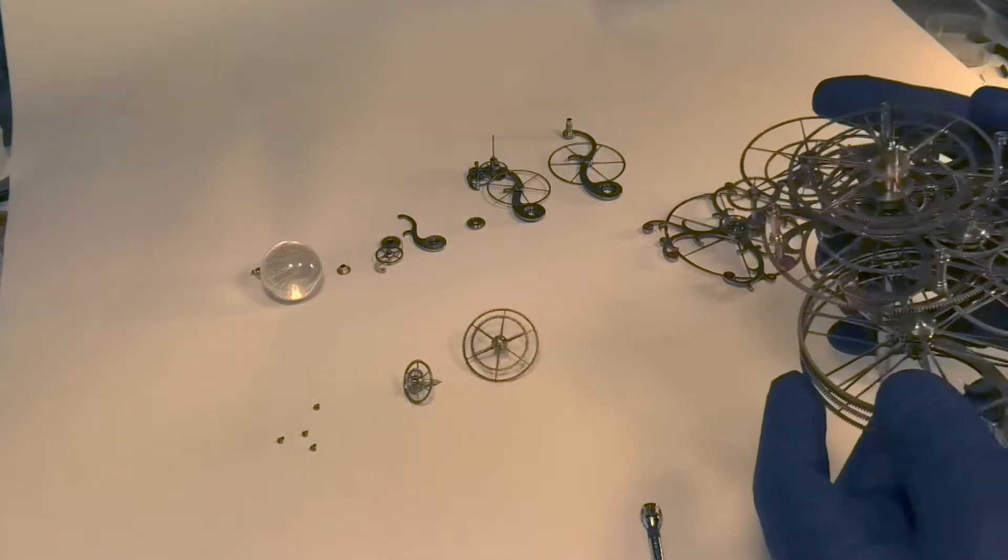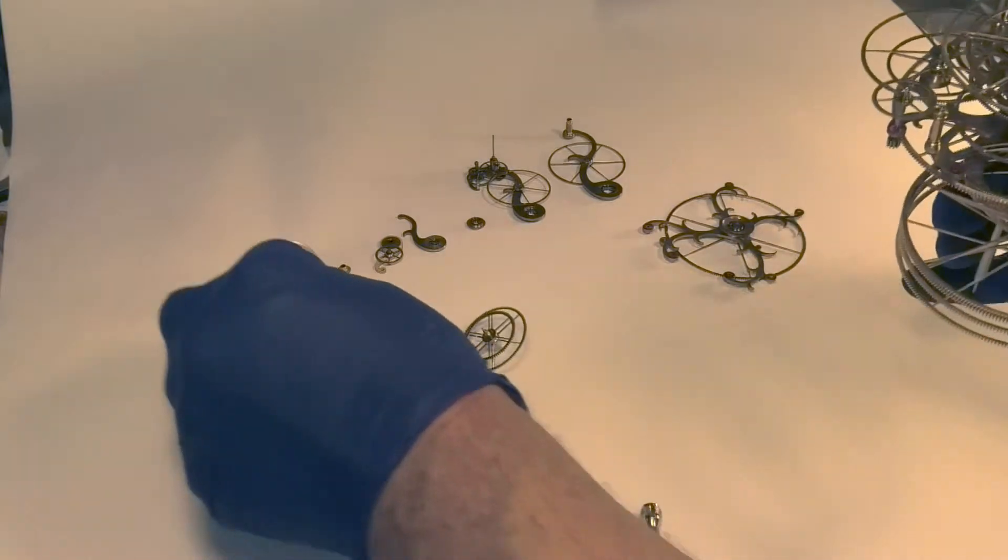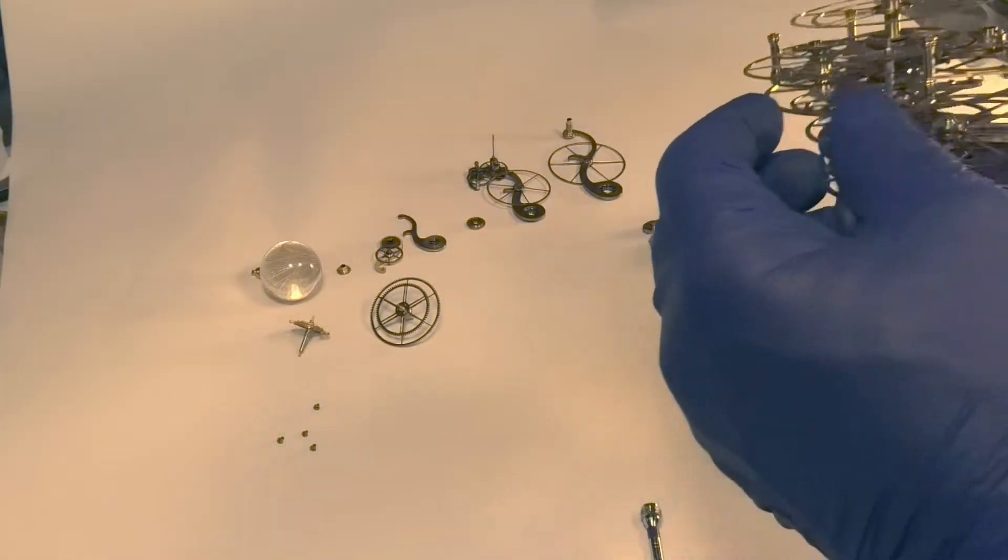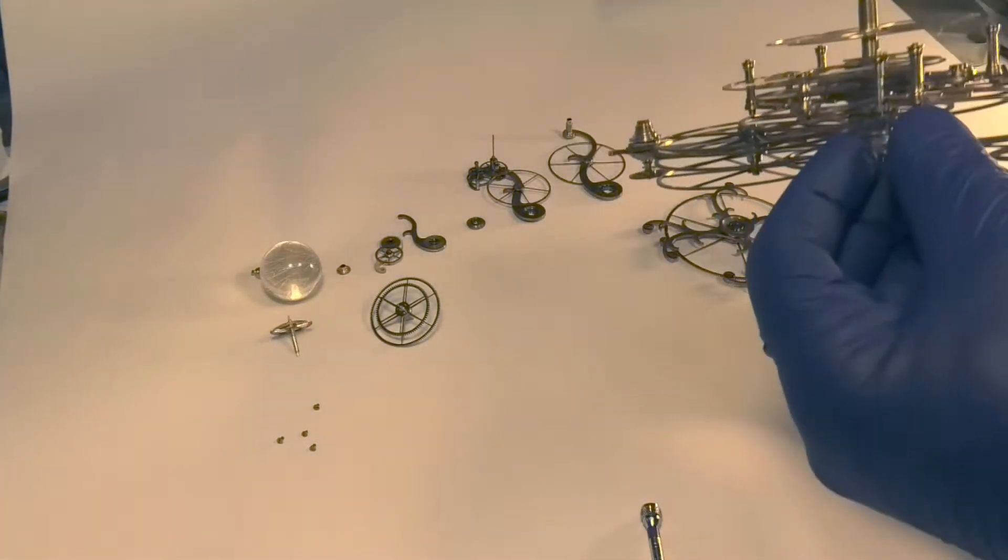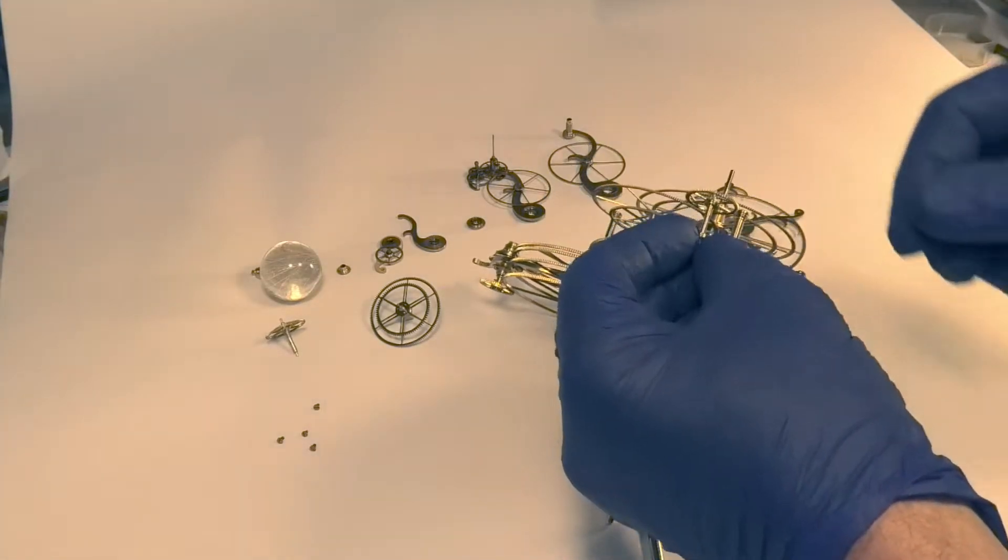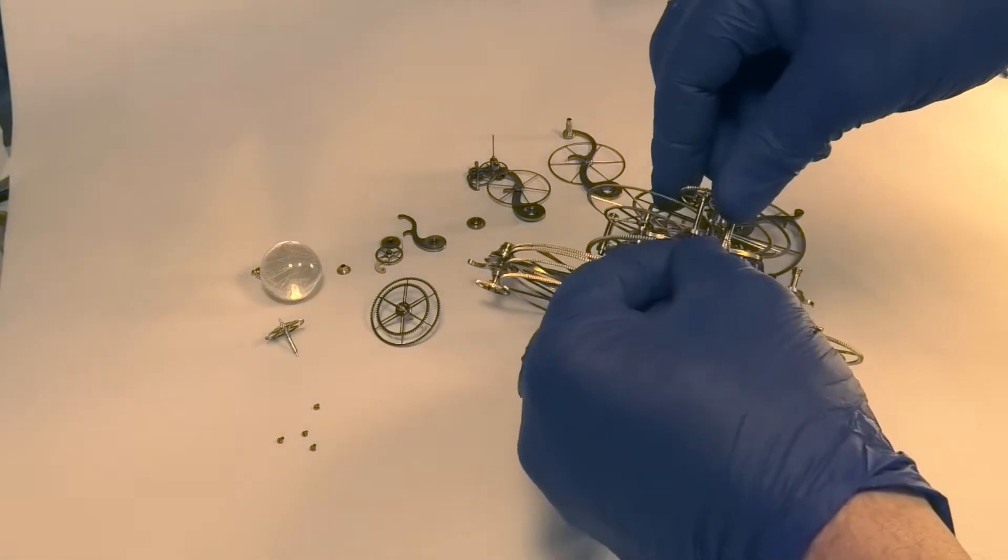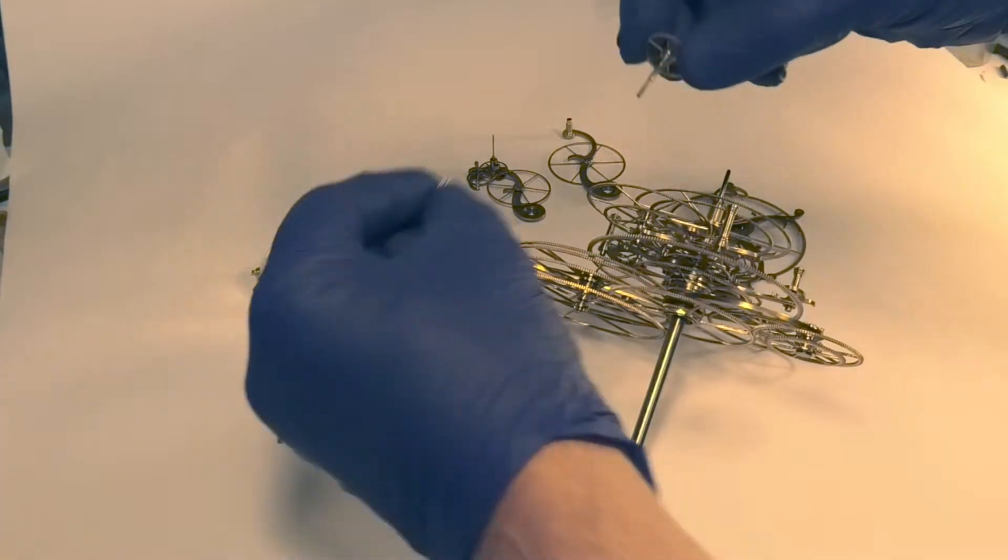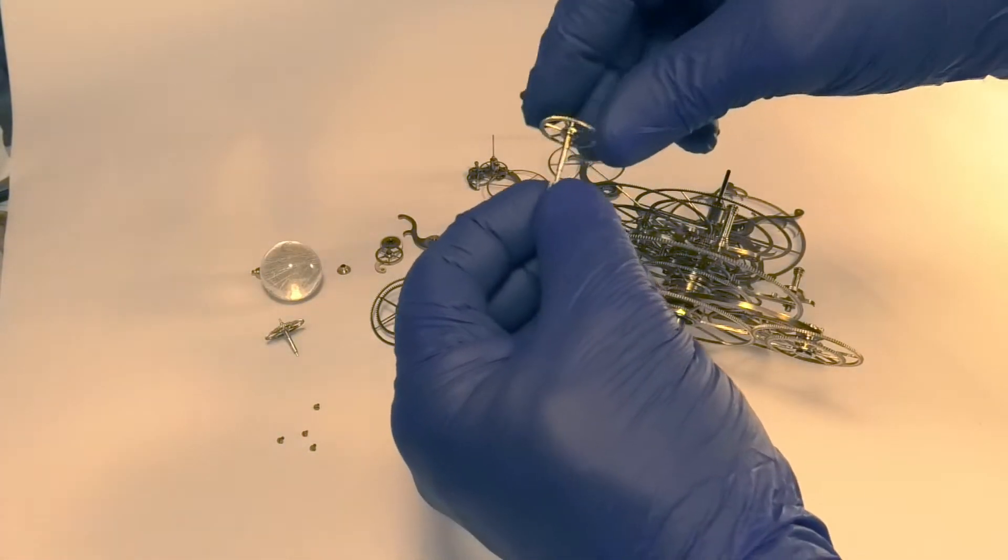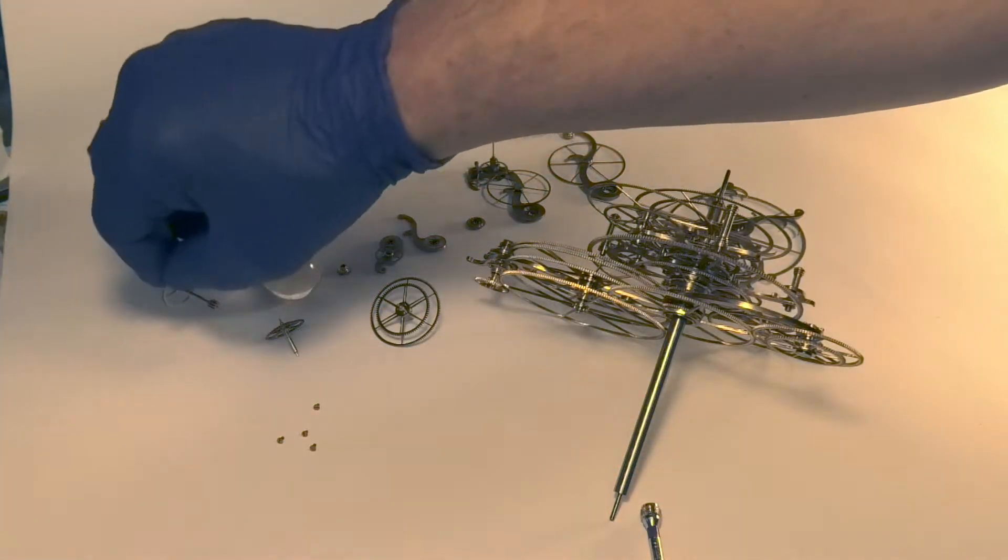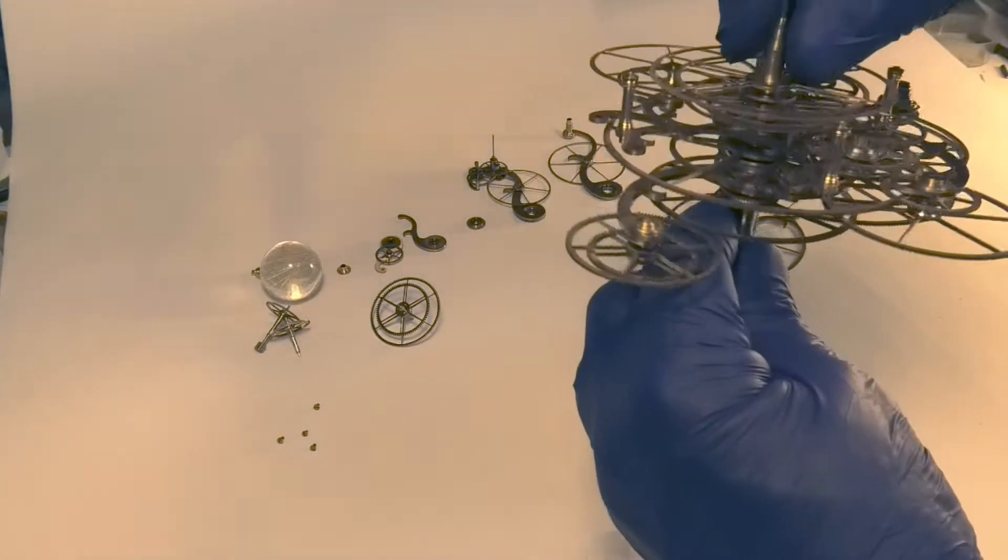Or I should say the two side, just two auxiliary operas. The Jupiter drive is a friction fit, the pin, so that is removed like that and then we can remove.